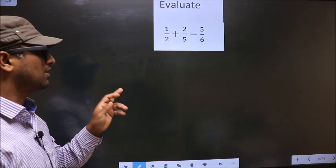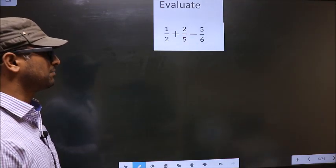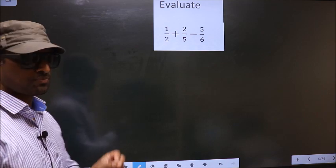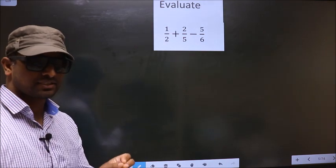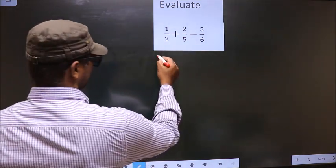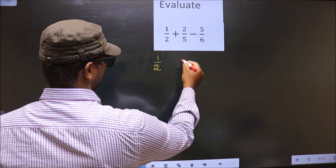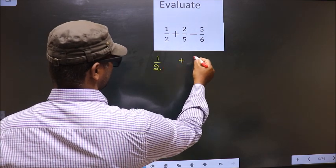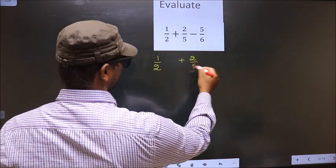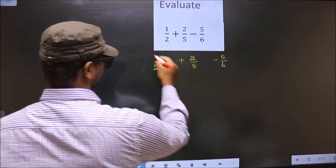Evaluate 1 by 2 plus 2 by 5 minus 5 by 6. The given expression is 1 by 2 plus 2 by 5 minus 5 by 6.